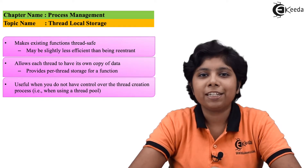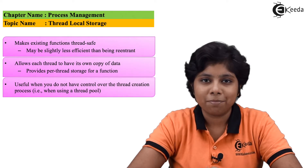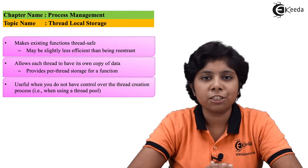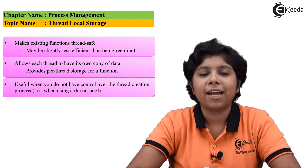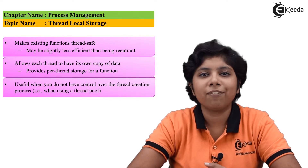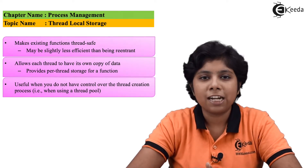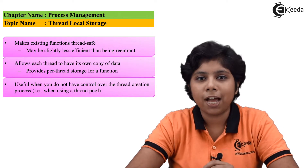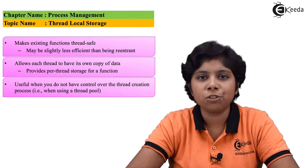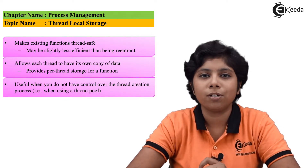For example, in a transaction processing system, each transaction should be processed in a separate thread and each transaction should be given a unique ID. To relate this unique ID to each thread, we use thread local storage.